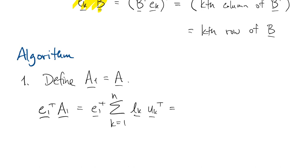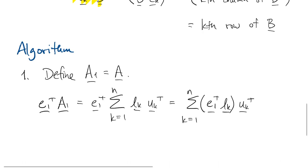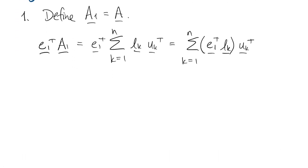So we use the outer product form for A. We move the E1 transpose inside the sum and use associativity. And now here's where that observation pays off from before. Remember we said that L2 is zero in row one, L3 is zero in row one. All of them are zero in row one, except for the very first column, in which case we get a one because of that property of having ones in the diagonal.